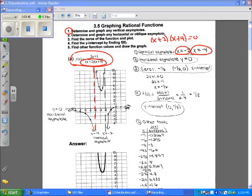This is a vertical asymptote x is equal to negative 4, and this is the other vertical asymptote x is equal to negative 2. Let's go to the next step.